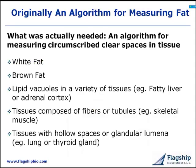With that, we developed the algorithm, and it is actually still in the process of being developed. What it does is measure circumscribed or sharply demarcated clear spaces in tissue. This is especially valuable for quantitating white fat, measuring vacuoles in brown fat, and vacuoles in a variety of tissues including fatty liver and adrenal cortex. We also found it can measure skeletal muscle fiber diameters and hollow spaces in glandular lumina or alveoli in lung.